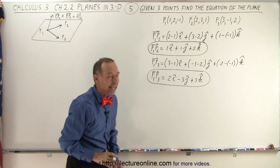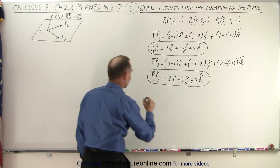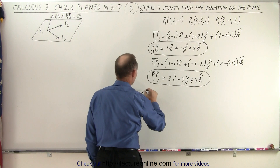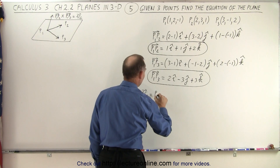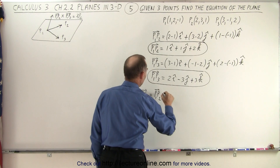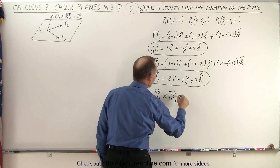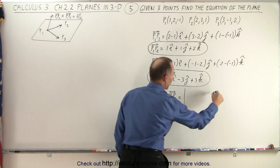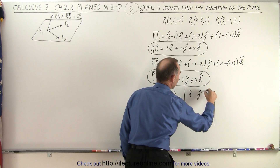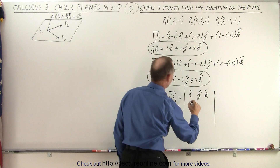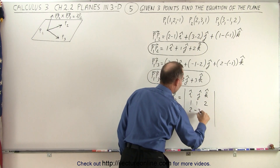Both of those vectors are on the plane. Now to get the perpendicular vector, we're going to take the cross product. So the perpendicular vector is going to be equal to the cross product of P1P2 and P1P3. That's going to be equal to the determinant with i, j, k in the first row, putting in the components of the first vector: 1, 1, 2, and the second vector: 2, negative 3, and 3.